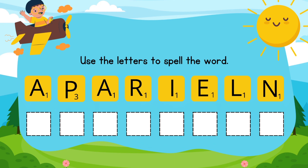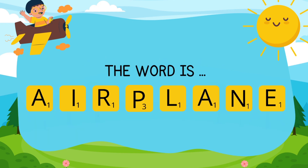A-P-A-R-I-E-L-N. What's the word? Let's spell it — it's airplane. The word is airplane.